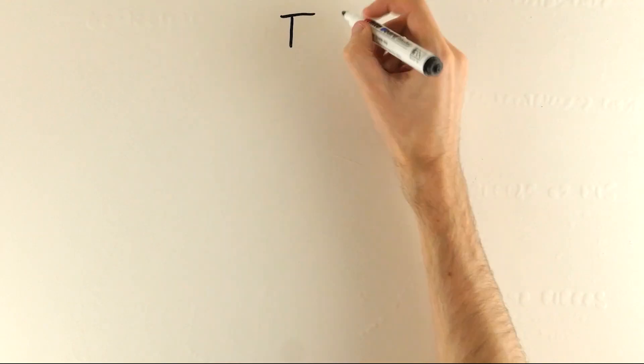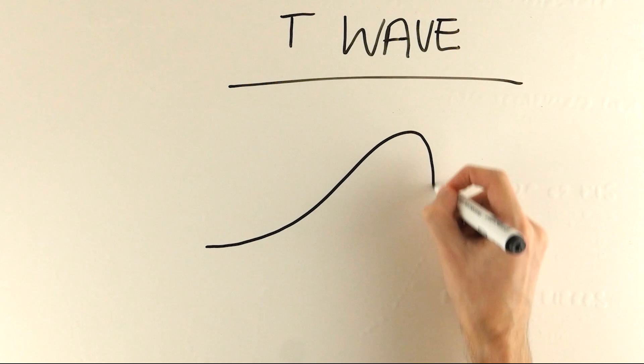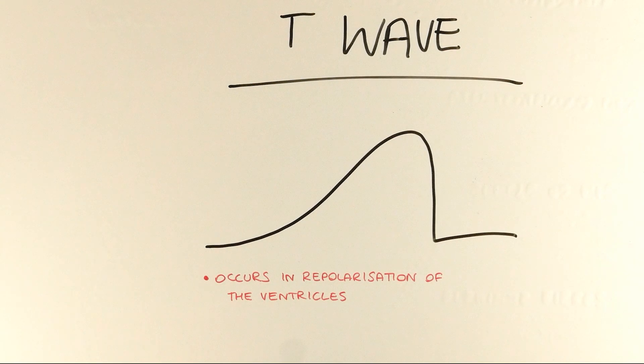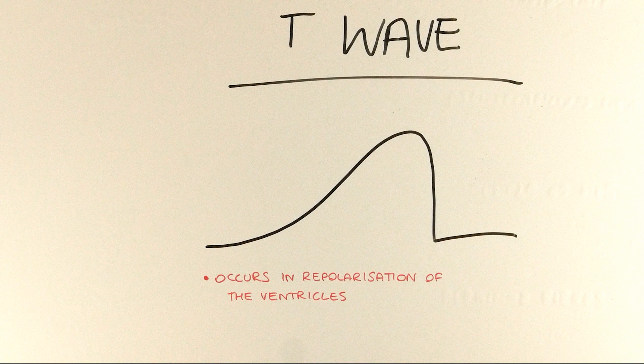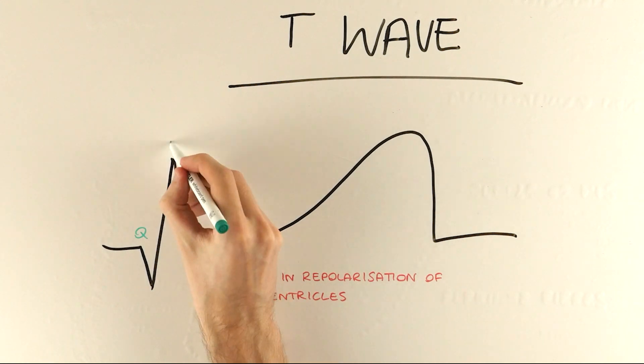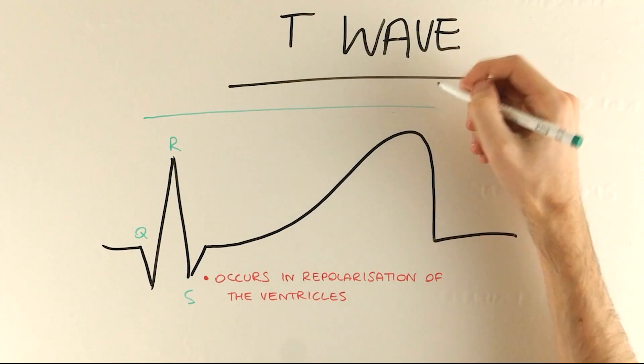This first hump is the T wave which signals the repolarization of the ventricles as they relax. Notice that it's not as round a bump as the P wave, it should actually be asymmetrical, with the upward slope being a bit more gradual than the downward slope.